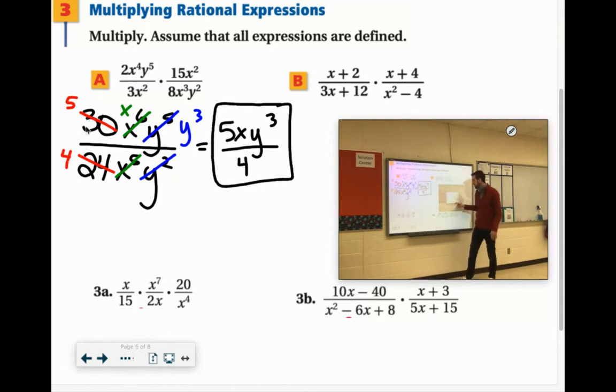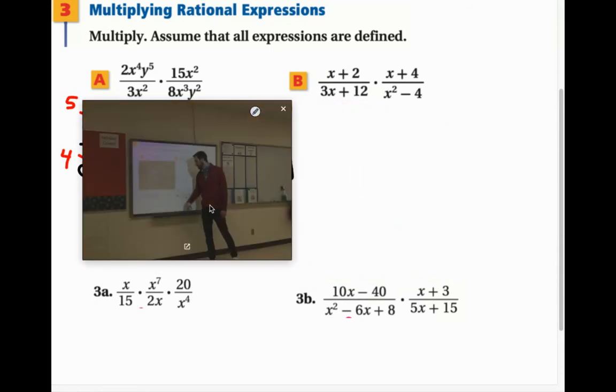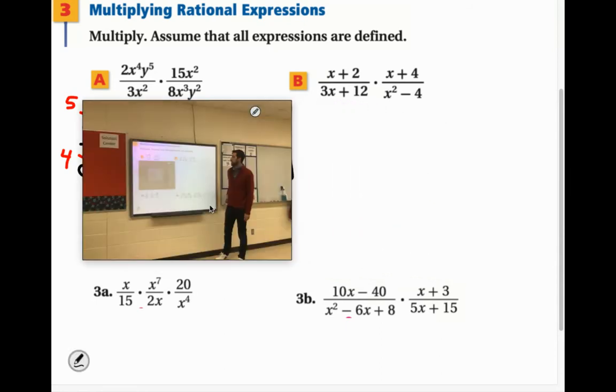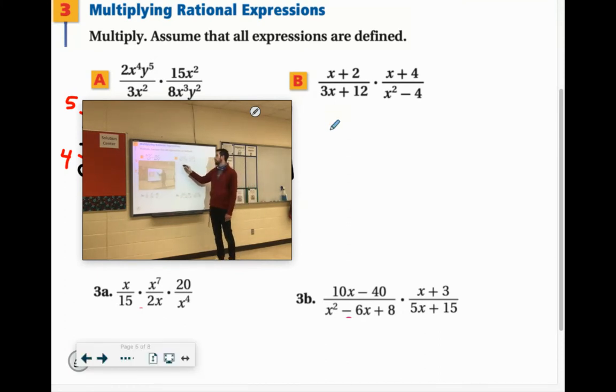Fantastic. Let's try another one. We have x plus 2 over 3x plus 12. Let's get all these in factored form. x plus 2, we'll just throw parentheses around it because we're probably going to cancel it out with something. 3x plus 12, common factor is 3.